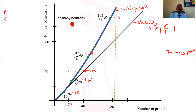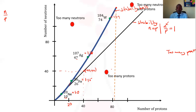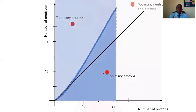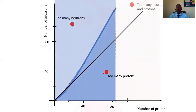We have three regions outside the stability belt. One region has too many neutrons. Another region has too many neutrons and too many protons — those with high atomic number above 83. And a third region has too many protons compared to the number of neutrons. The stability belt helps us identify which kind of radioactivity or decay these atoms can undergo in order to become stable.